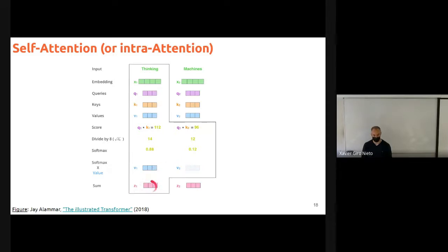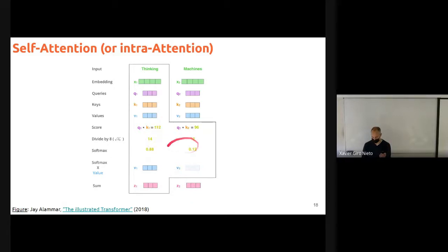Z1 is the contextual representation of 'thinking' when 'thinking' is found next to 'machines.' Similarly, Z2 would be the encoding — the contextual representation of 'machines' — computed by combining values weighted with the attention scores for 'machines.'